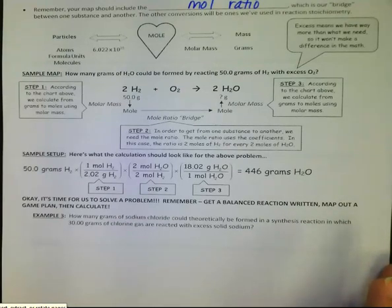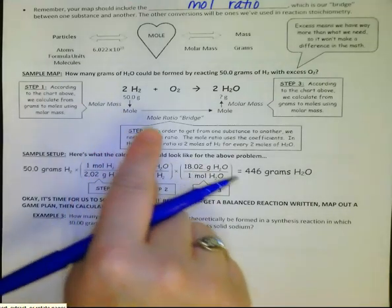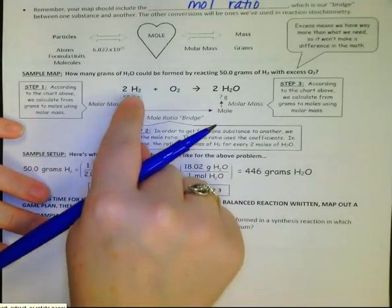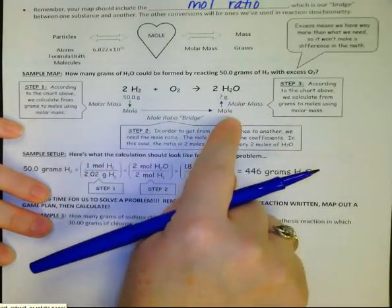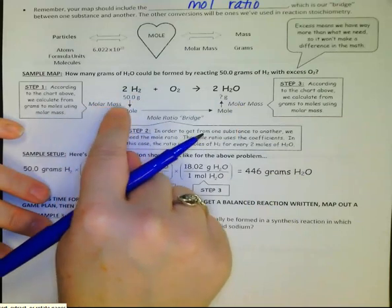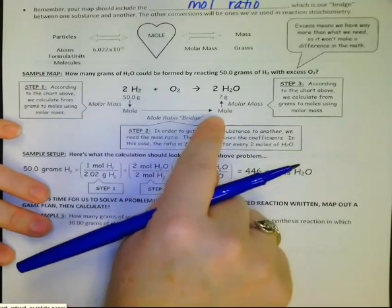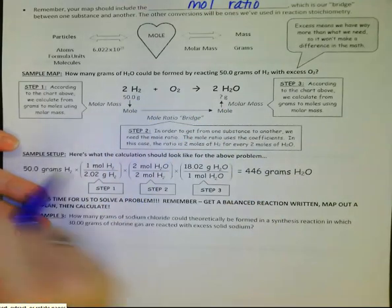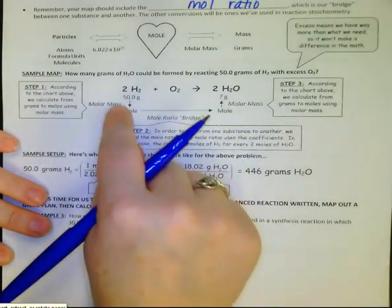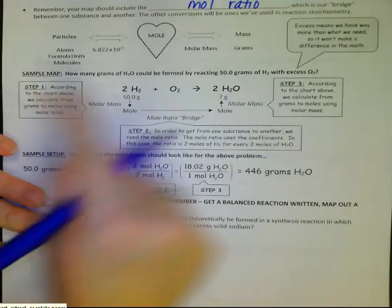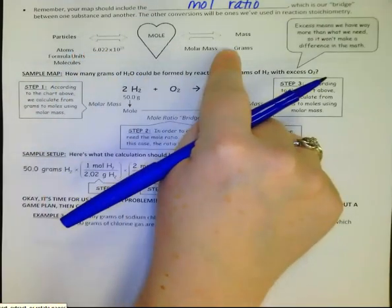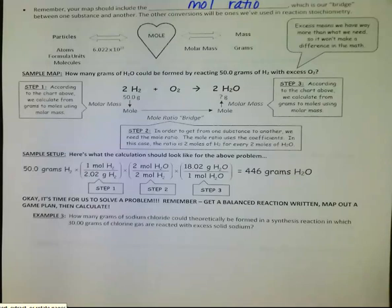What I am going to remind you about is that you need to make a map. Your map has to be on your paper, period. I don't want to hear any complaining. Just do it. Your map should also include the mole ratios, where they go.